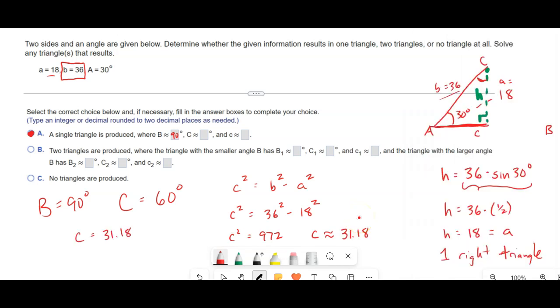So when you set this up, if A is not bigger than B, the next thing you do is compute h. h is, in this case, B sine A. It's the side that's not opposite the angle I'm given times the sine of the angle I'm given. If A is equal to that, and it was, then that means you have a right triangle.